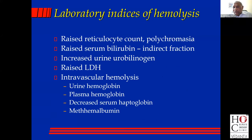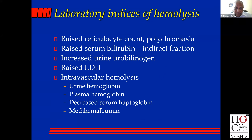Indicators that you're dealing with hemolytic anemia: first, a raised reticulocyte count — this is the most important. If you don't have a retic count and you have polychromasia on the film, that means the retics are raised. Second, raised serum bilirubin — here it will be the indirect reacting bilirubin which is raised. Next, increase in urinary urobilinogen — you almost never do this test today, it's too cumbersome. And this I believe is very important: raised LDH. If your LDH is normal, it is unlikely that there is significant hemolysis.